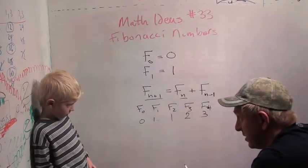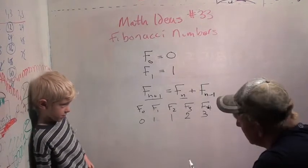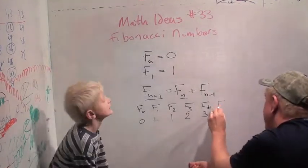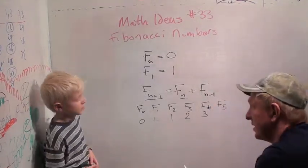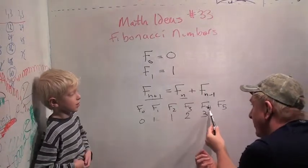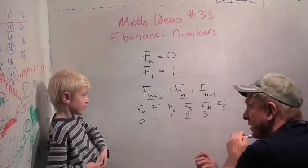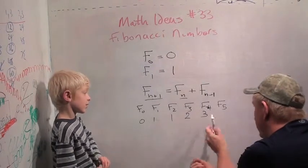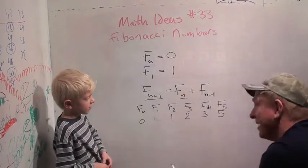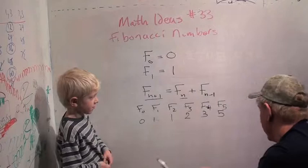Okay. Think we can do one more? No. No? I think we should. Just one more. F five. Okay? F five is equal to F four plus F three. Which is five. Which is three plus two, which is five. Five. Look at that. F five is equal to five.